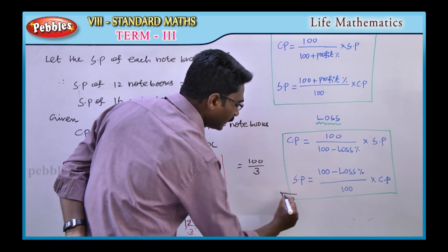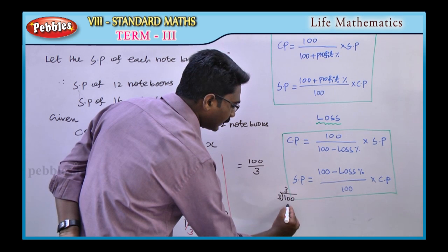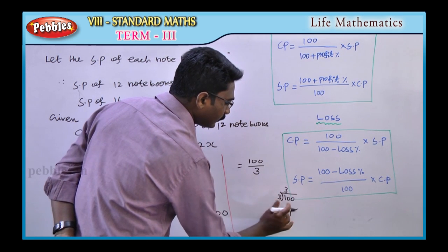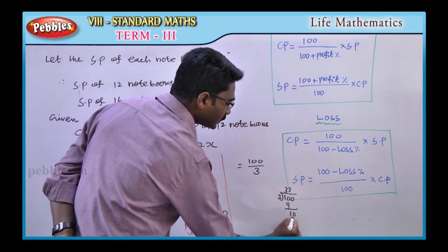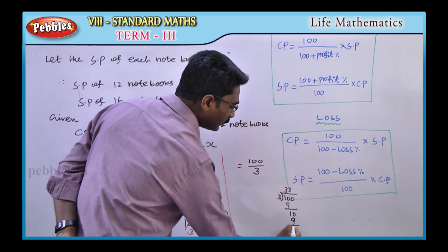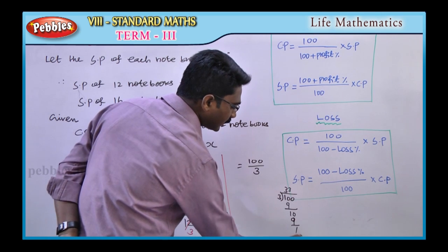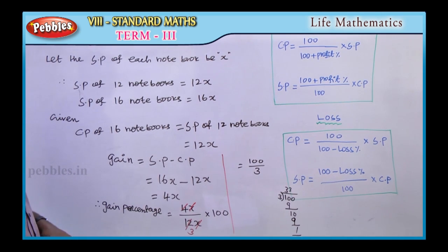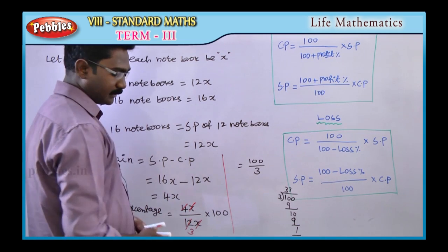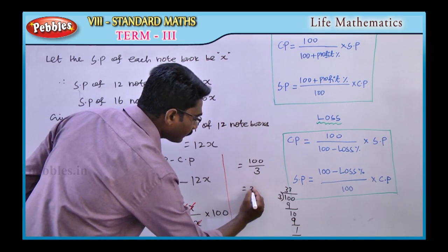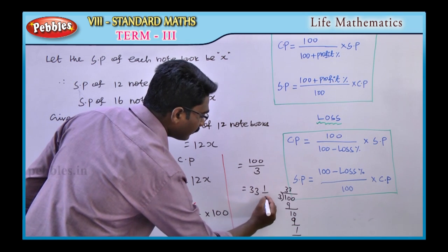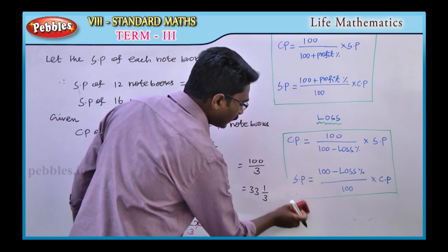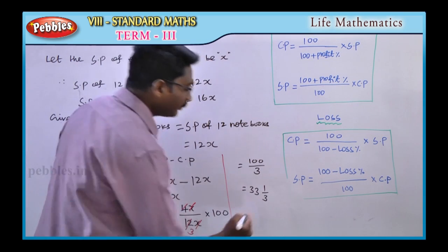Using long division: 100 divided by 3. 3 times 3 is 9, subtract from 10, remaining 1. Again 3 times 3 is 9, remaining 1. So the quotient is 33 with remainder 1, giving 33 and 1/3 percentage.